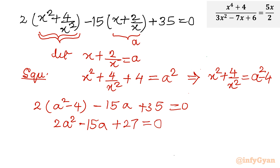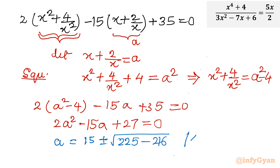This is a general quadratic equation. We will apply the Shridharacharya formula to find the value of a. So a equals: minus b is 15, plus or minus under the root b square is 225 minus 4ac which is 8 times 27 equals 216, divided by 2a which is 4. That gives 15 plus or minus square root of 9, which is 3, over 4.